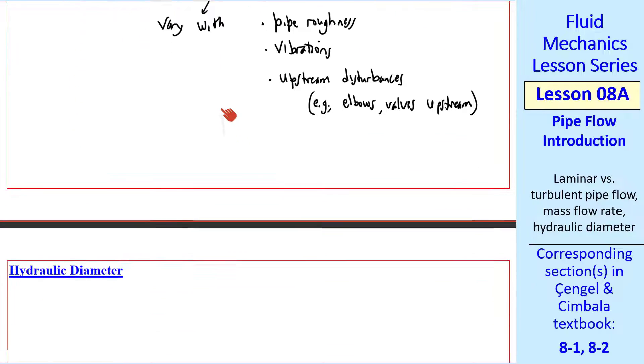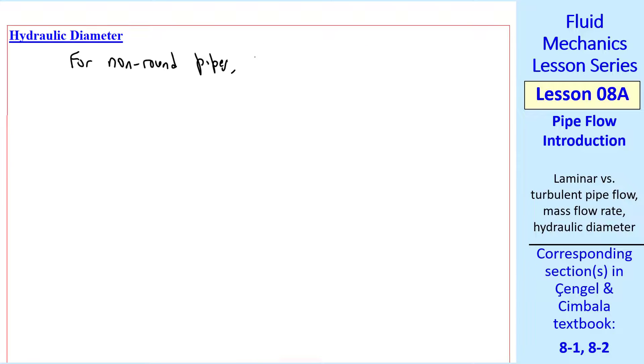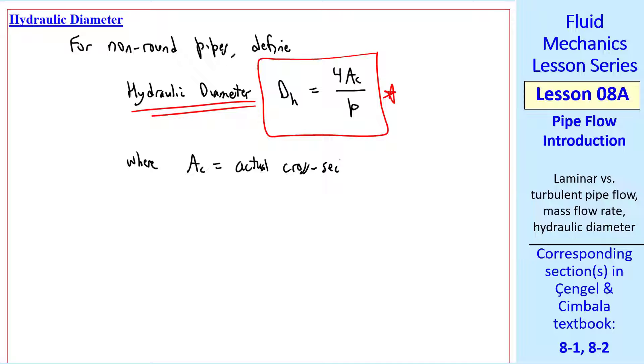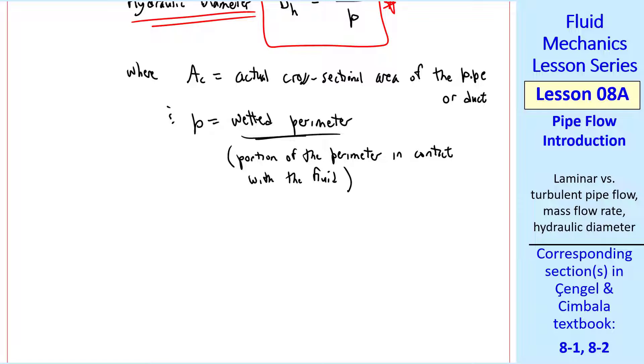Now I want to discuss hydraulic diameter. This is used for non-round pipes, for which we define the hydraulic diameter, D sub H, is 4 AC over P, where AC is the actual cross-sectional area of the pipe or duct. And P is called the wetted perimeter, which is the portion of the perimeter in contact with the fluid. It's the actual perimeter if you're talking about a gas or a pipe that's totally filled with a liquid. But we have to be careful if we have a channel.